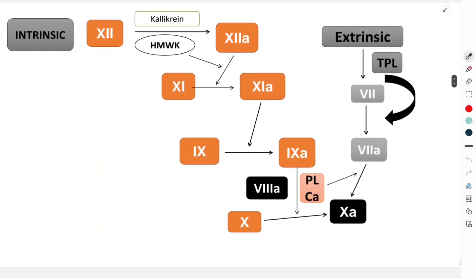In the intrinsic pathway, the first thing to occur is activation of factor 12, in the presence of two important cofactors: kallikrein and high molecular weight kininogen. Factor 12 becomes 12A. This 12A activates the next factor in line, factor 11 — a process also accelerated by high molecular weight kininogen — giving us factor 11A.